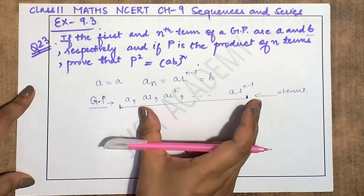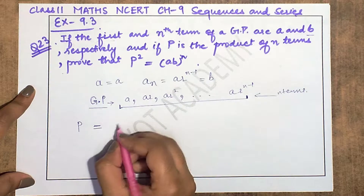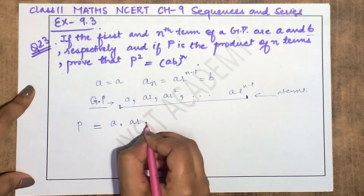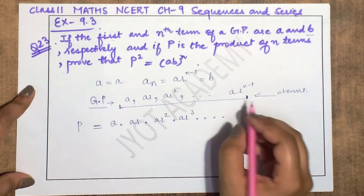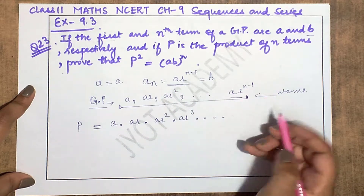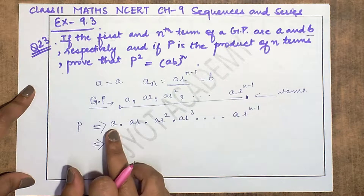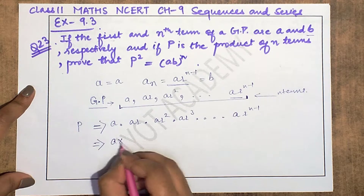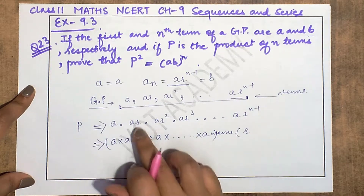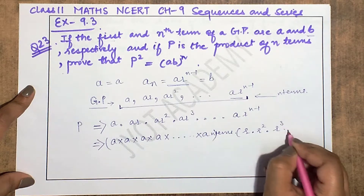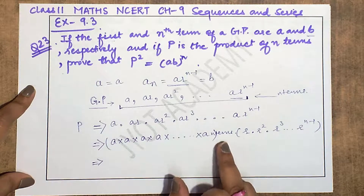The product of these n terms is given as P. So that means P = a · ar · ar² · ar³ · ... up to the last term ar^(n-1). Now combining all the a terms and all the r terms separately: a appears n times, and r terms are r · r² · r³ · ... up to r^(n-1).